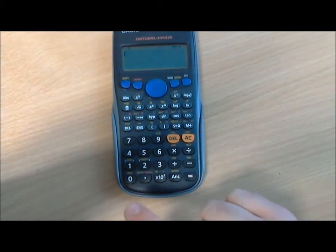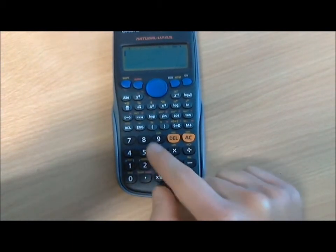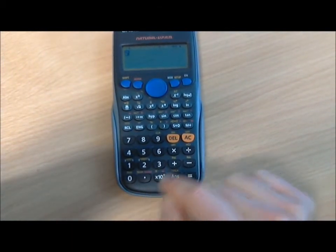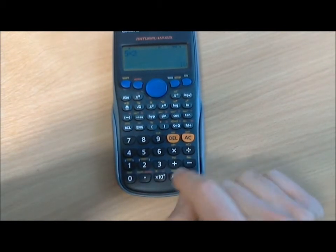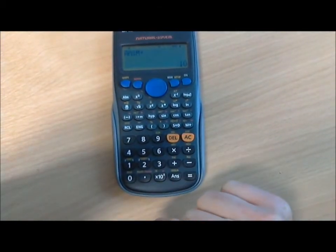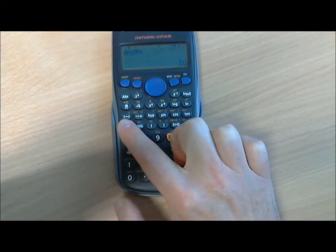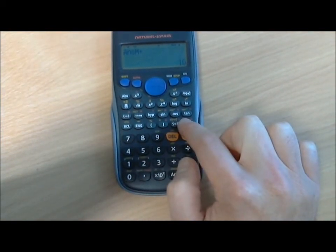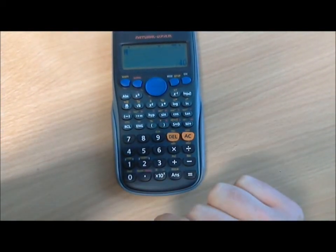If we want to add something extra into memory, so say 5 by 2 is 10, and if we hit memory plus, that will add that into memory. So if we recall memory now, we should have 40 there, 30 plus the 10 we just added in, and indeed we do.